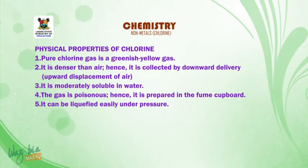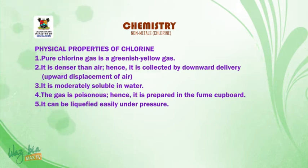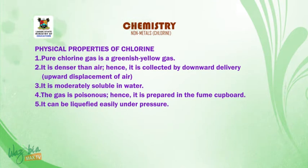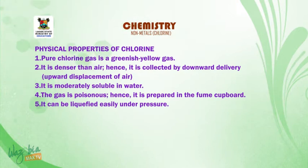Physical properties of chlorine. 1. Pure chlorine gas is a greenish-yellow gas. 2. It is denser than air; hence it is collected by downward delivery or upward displacement of air. 3. It is moderately soluble in water. 4. The gas is poisonous; hence it is prepared in the fume cupboard. 5. It can be liquefied easily under pressure.